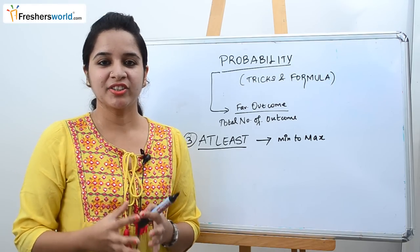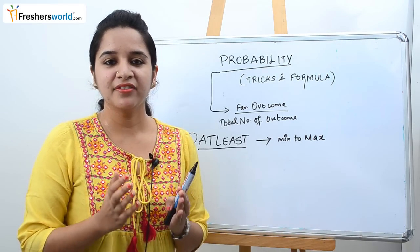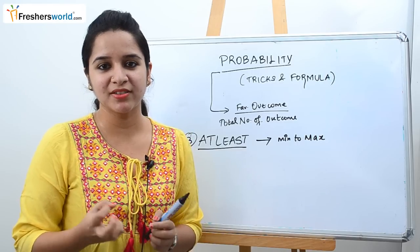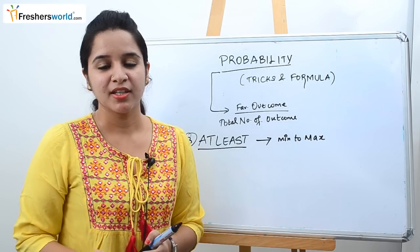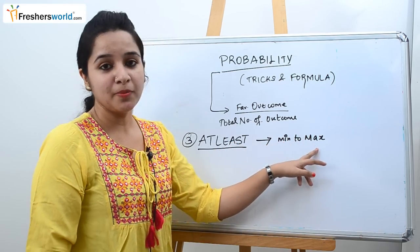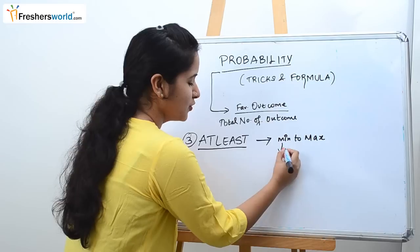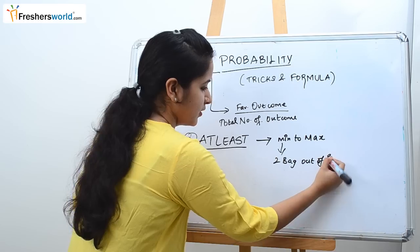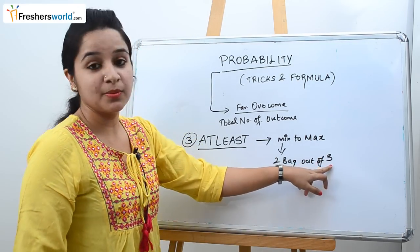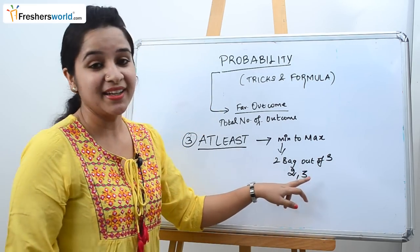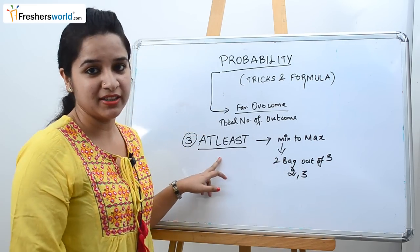Let's say a question asks you have three bags and out of which you need to choose at least two bags. So it says at least which means minimum to maximum. So minimum you have to choose two bags out of three, the maximum is three. So the various probabilities that you have to do is two and three.